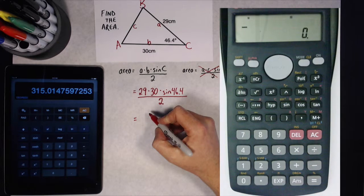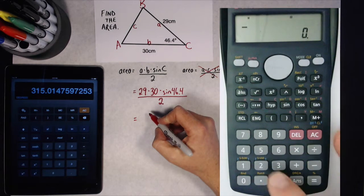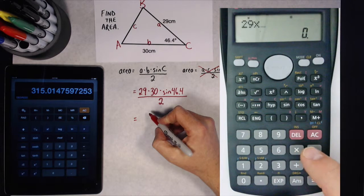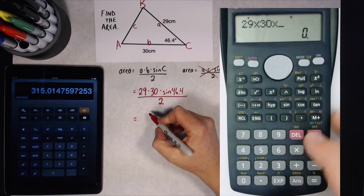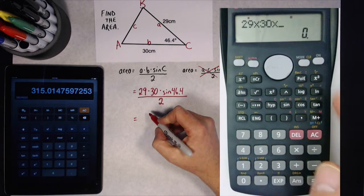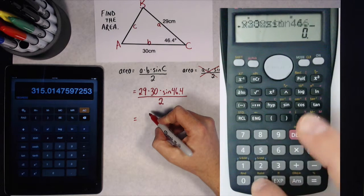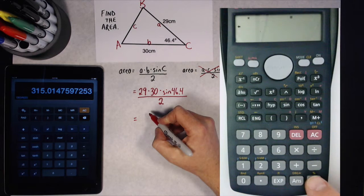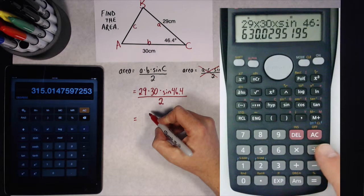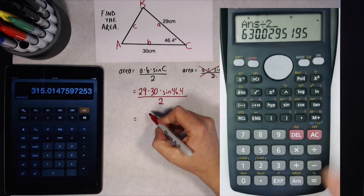Let's take a minute and just see if we can see that a little better on this calculator. So that calculation was 29 times 30 times, and on this calculator, life is a little bit easier actually. I can just type in the way I see it, sin of 46.4. I'm going to press equals, and then show you I've got to take that number and divide by 2. And you'll see I get the same answer on both calculators, 315.0147597.